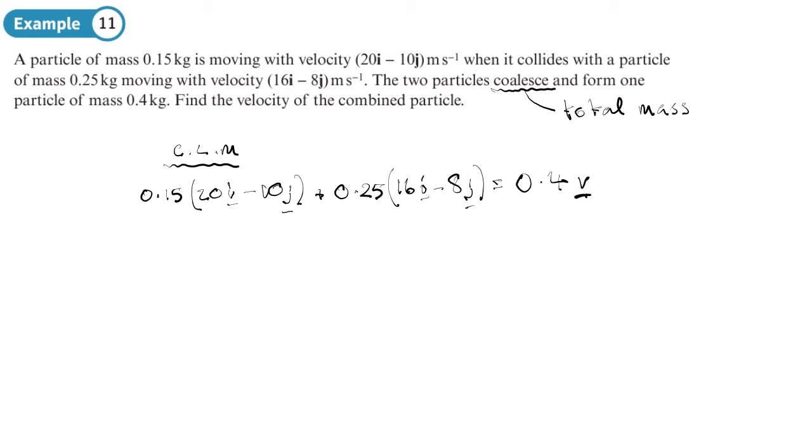So before the collision, we're going to have 0.15 times by 20i minus 10j plus 0.25 times by 16i minus 8j. And that is going to equal the total momentum afterwards, which is just going to be the combined mass times by the velocity v. So we'll underline it.